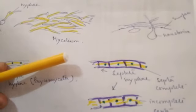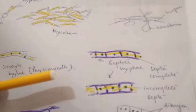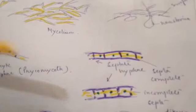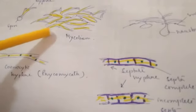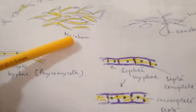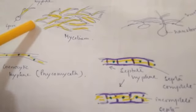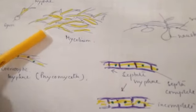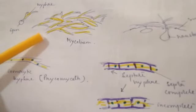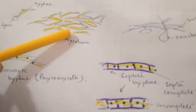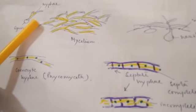Another nutritional mode is symbiotic. In symbiotic associations, fungi have mutual benefit with other organisms. When associated with green algae — which can prepare their own food — the fungi use their extensive surface area to absorb water and minerals from the soil or substratum and provide these to the algae. In return the algae synthesize food. This symbiotic association of fungi with algae is called lichen.